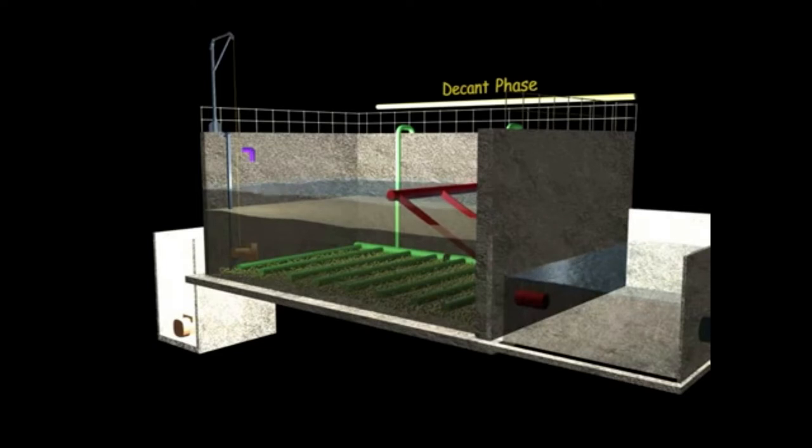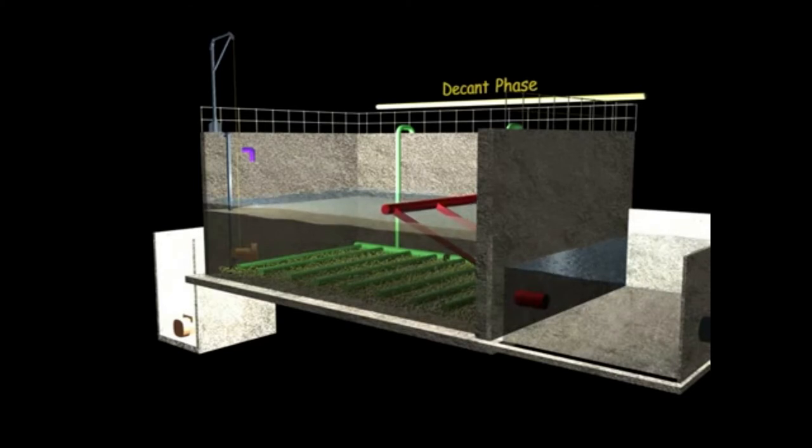Desludging is done simultaneously during this decanting period. The sludge level in the SBR tank is monitored through visual inspection or controlled by timer.